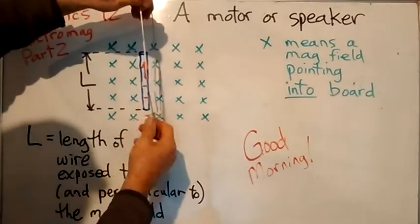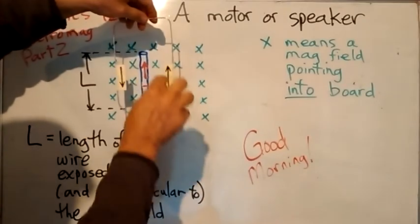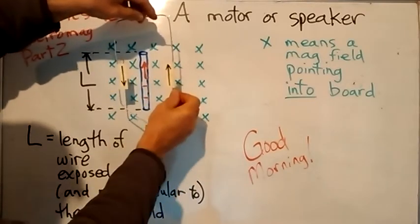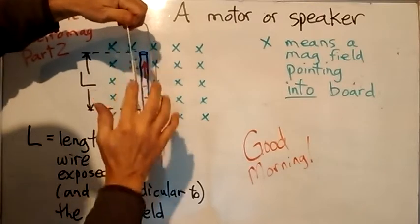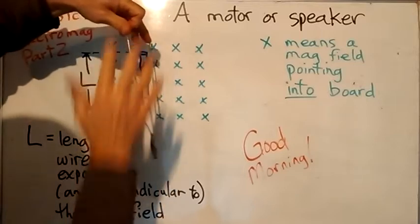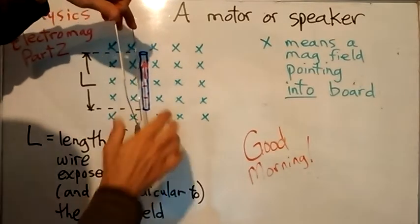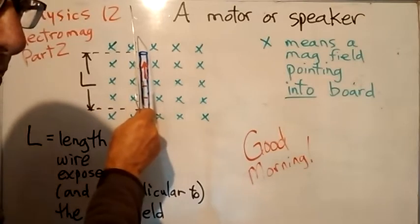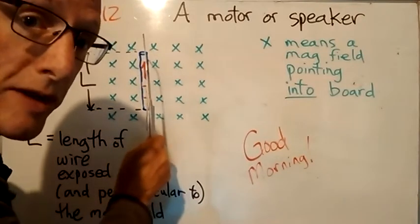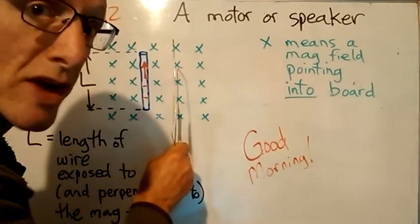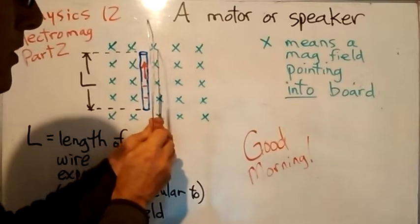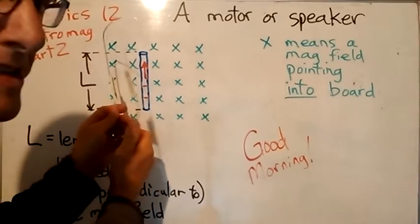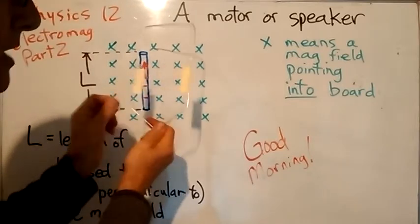So what we need is something that could change the current, so that if we originally had electrons going up in this wire and that wire gets pushed this way, when it comes around we need something to cause the electrons here to go upward too. In a DC motor, they created something called the split ring commutator, and that does make the current change. The good thing about alternating current - the stuff that comes from BC Hydro - it changes 60 times per second, so you can have a motor turning constantly with the electron flow direction changing 60 times per second.